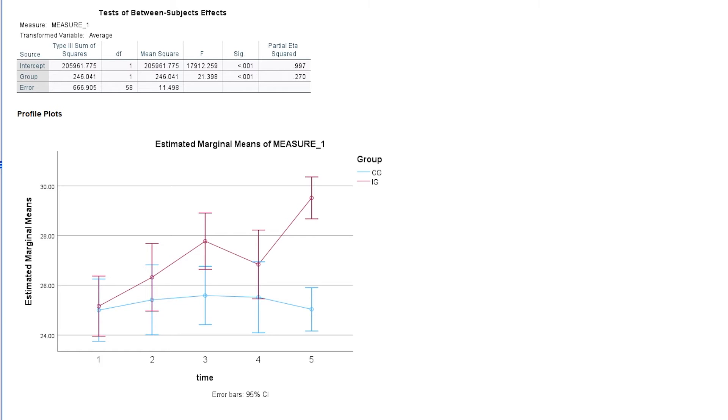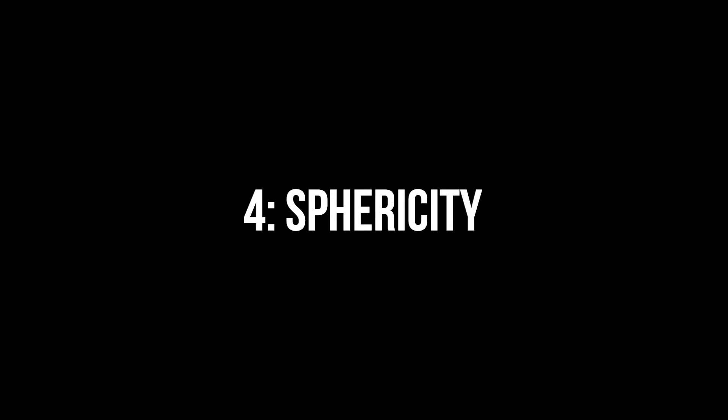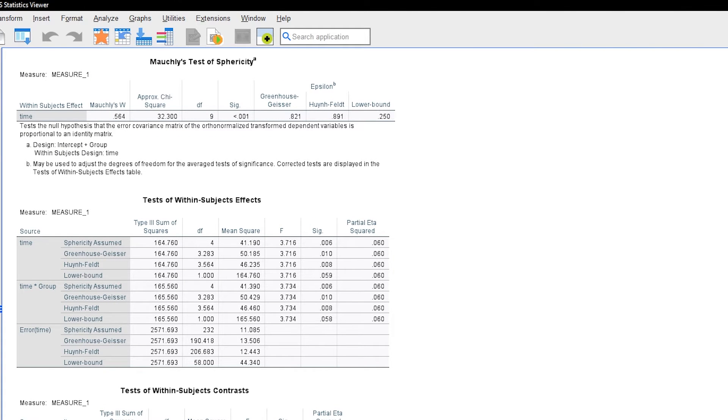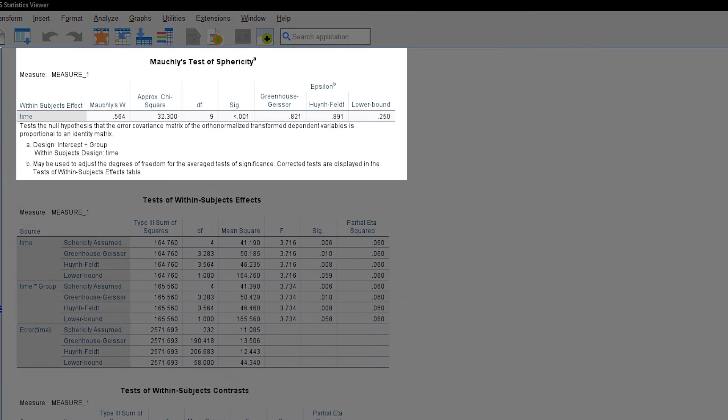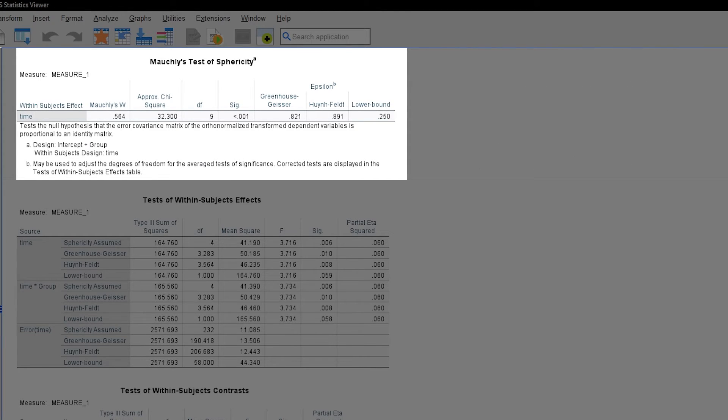Before we can look at the results of the mixed ANOVA, I would like to remind you of the requirement of sphericity. Depending on the sphericity test result, we have to look at a different part of the output. Sphericity is tested with the so-called Mauchly's test. Sphericity means equal variances for the difference in the test variable between time points 1 and 2, 1 and 3, 1 and 4 and so forth. However, sphericity is only an issue for 3 or more time points.